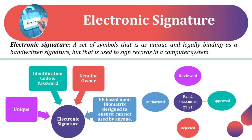Electronic Signature is a set of symbols that is as unique and legally binding as a handwritten signature, but used to sign records in a computer system. An Electronic Signature is unique, based on an Identification Code or Password, tied to a Genuine Owner, and based upon Biometrics — designed to ensure it cannot be used by anyone else.